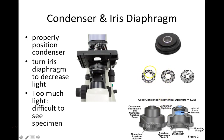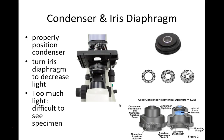The iris diaphragm works just like the iris in our eye — it can open a larger hole to let light through, or it can constrict. Too much light makes it difficult to see a specimen, so we always want to first start with a low light intensity and then increase it if needed.